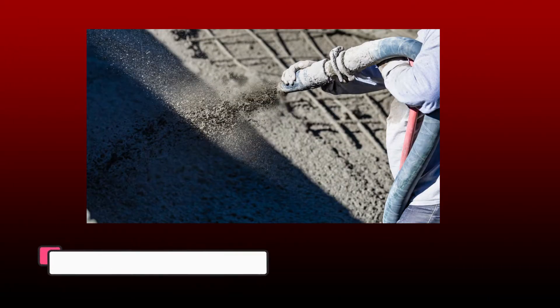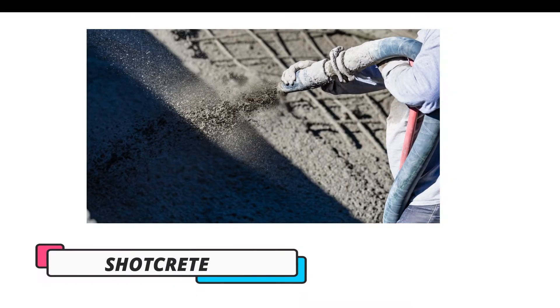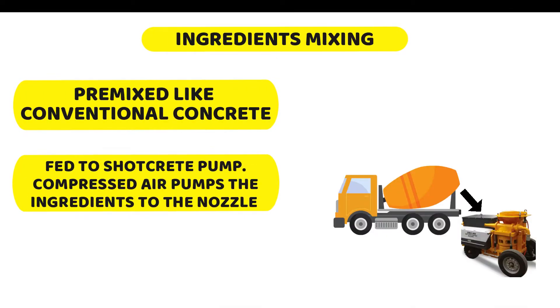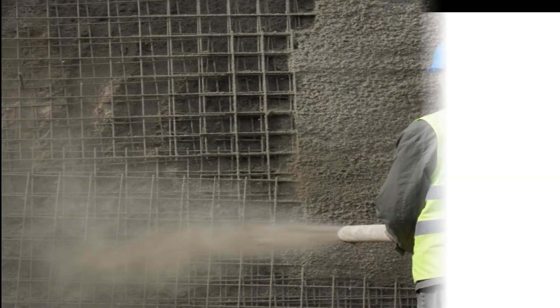Next is ingredient mixing in the case of shotcrete. The ingredients are premixed like conventional concrete, fed into a hopper, and from there it is sprayed.